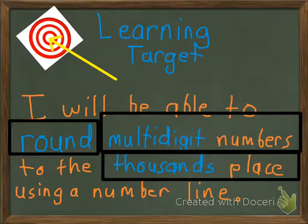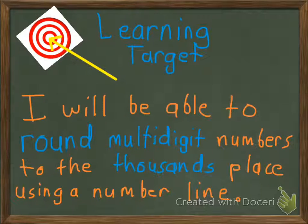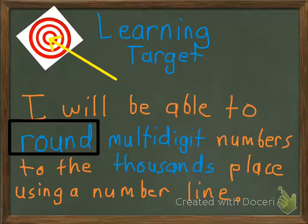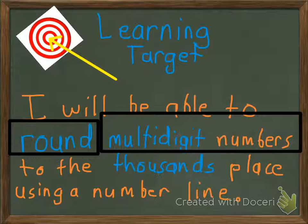So, let's go ahead and break that down step by step. What we're able to do is round multi-digit numbers, numbers with multiple digits.